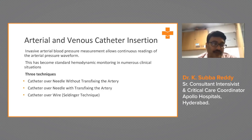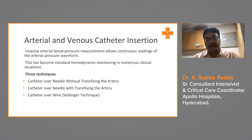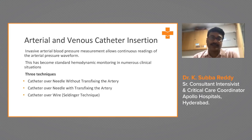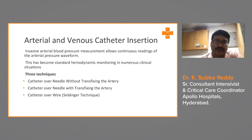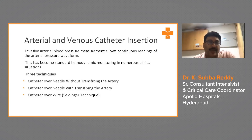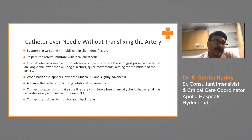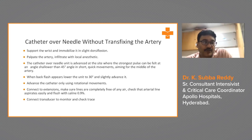In the intensive care unit, we typically use a flow switch. We give mild extension to the hand, enter, see the blood flow, and thread the catheter. With the guidewire technique, you locate the artery first — as done in cath labs — then put the catheter and thread the sheath over the guidewire. Support the wrist and immobilize it in slight dorsiflexion.